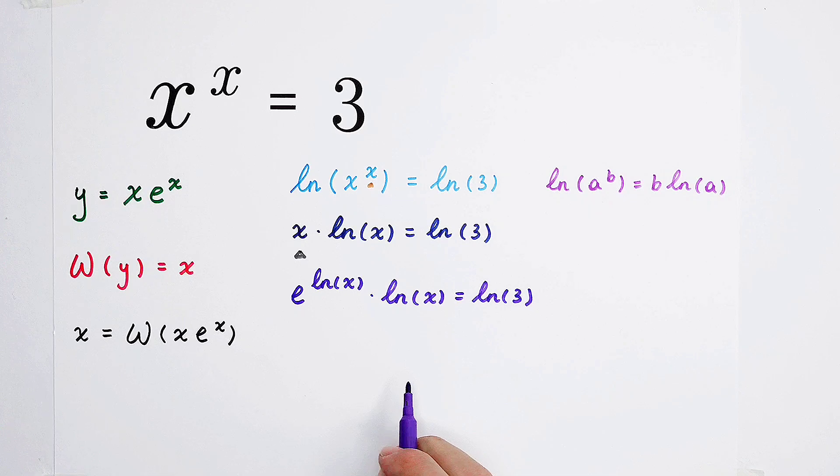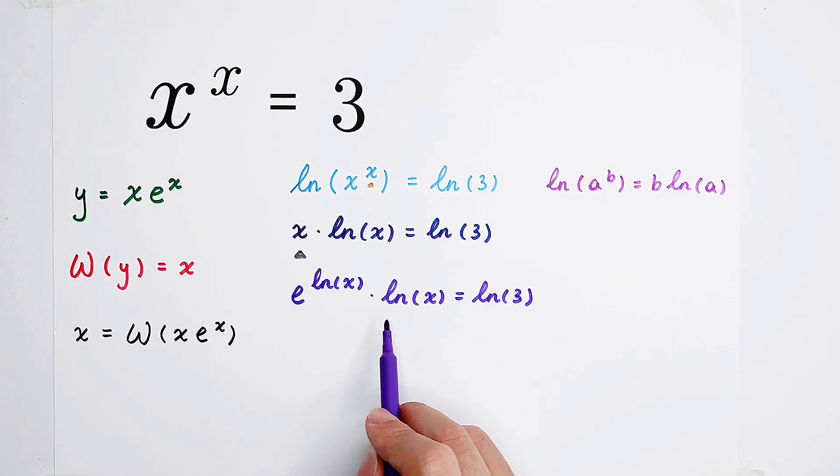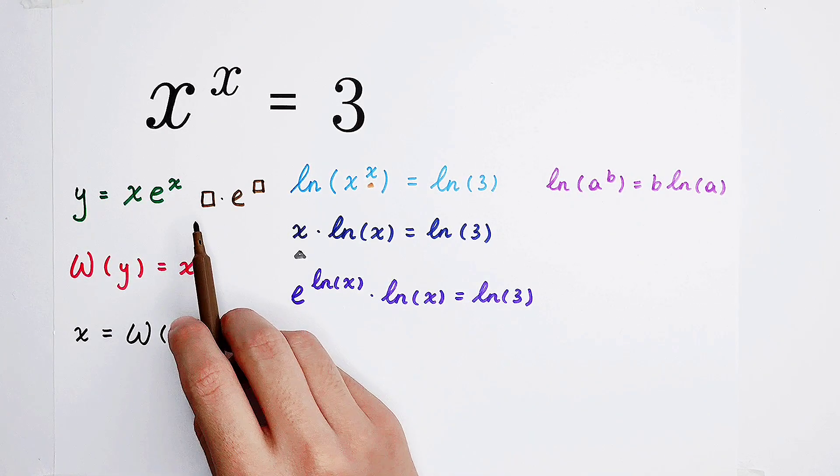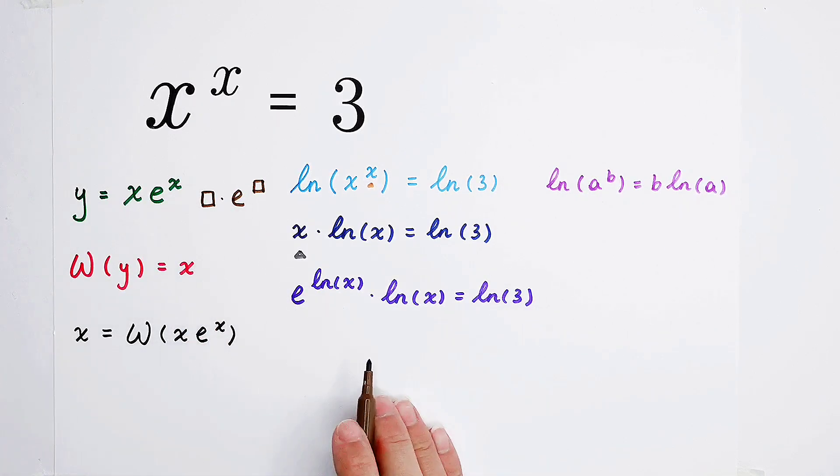So the left side is e to the power of the natural log of x times the natural log of x. So it has the form something times e to the power of something. So then...